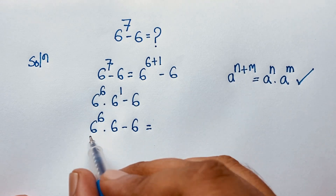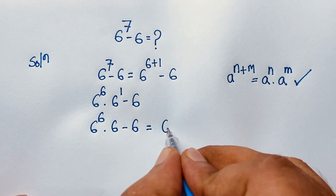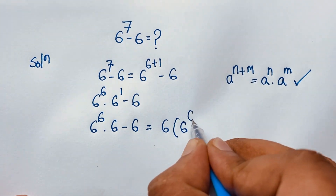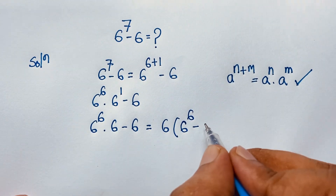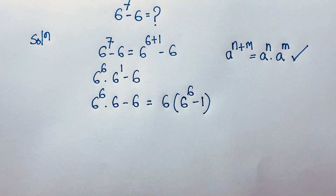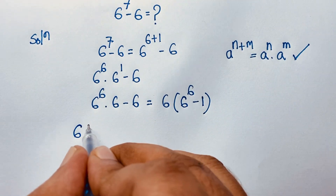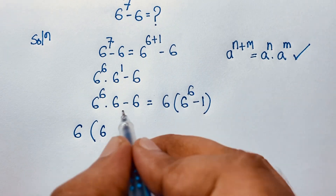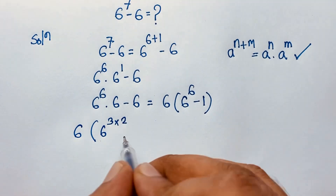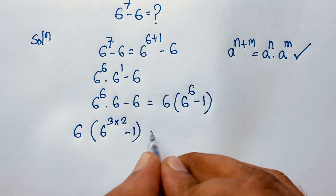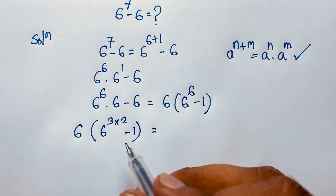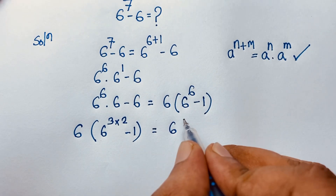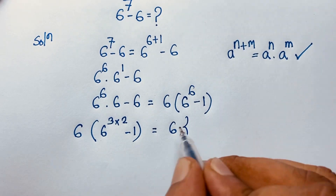Here, 6 is common, so we factor it out. We get 6 to the power 6 times 6 minus 6, which simplifies to 6 to the power 6 times (6 minus 1), giving us the factor (6 minus 1). We can also write 6 to the power 6 as (6 to the power 3) squared, and note the negative 1.